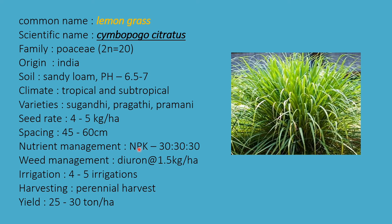Nutrient management: NPK 30:30 kg; phosphorus and potassium applied in basal doses, nitrogen in 2 to 3 split doses. Weed management uses diuron at 1.5 kg per hectare. Irrigation: 4 to 5 times. Lemongrass is a perennial crop, harvested for 4 to 5 years. Yield is 25 to 30 tons per hectare.